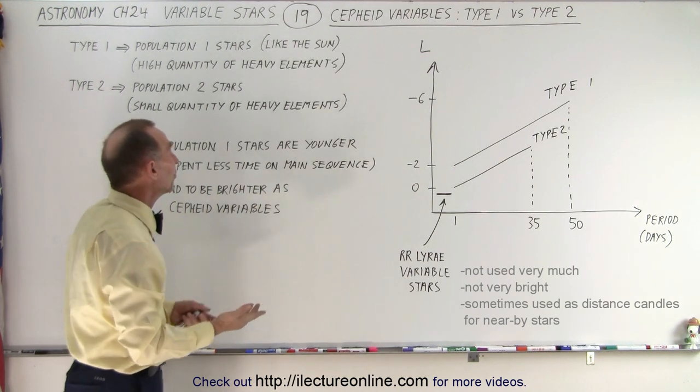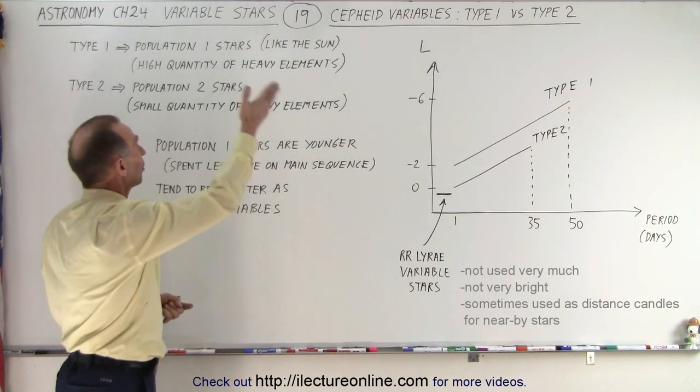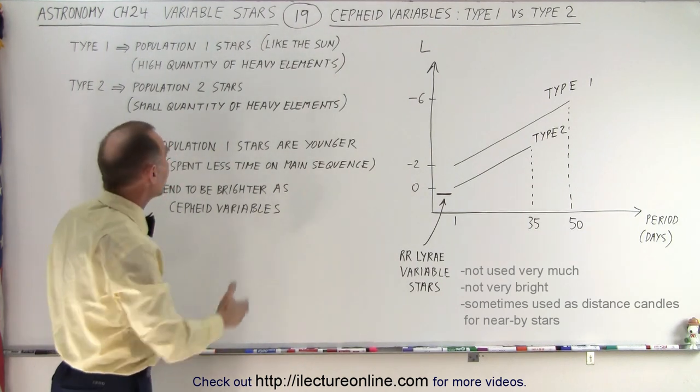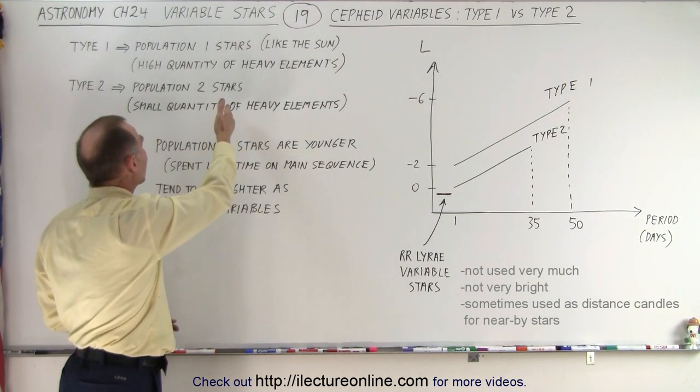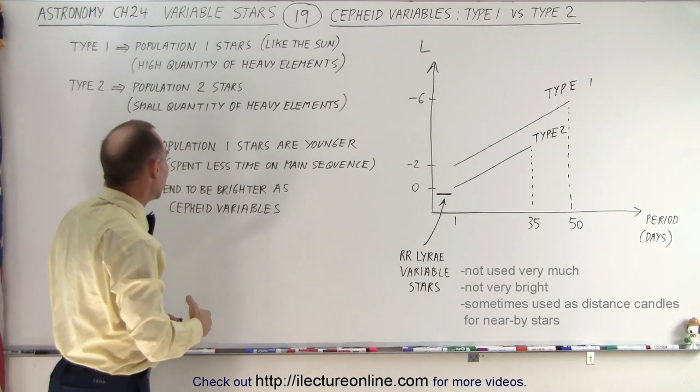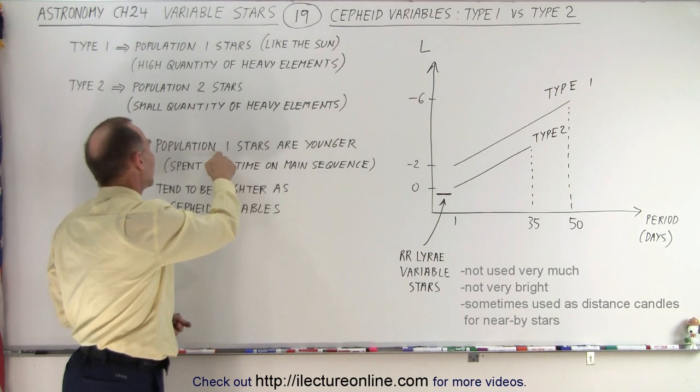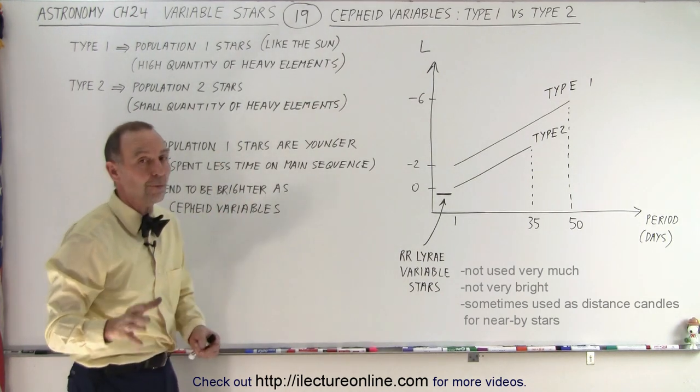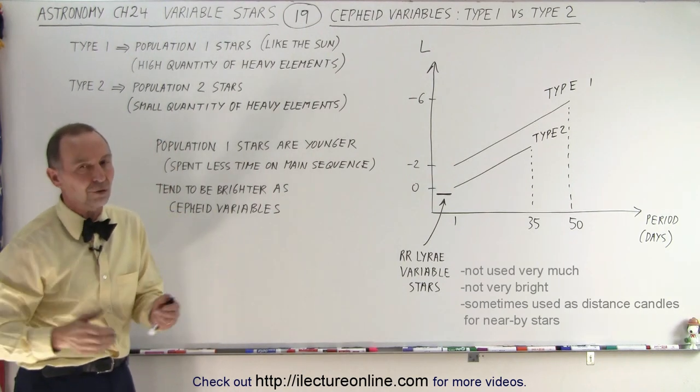So now you realize the difference. Notice that Type 1's are made from population 1 stars, newer stars with more heavy elements. Type 2 are made out of population 2 stars, those are the older stars which don't have as many of the heavy elements. And it turns out that population 1 stars tend to be brighter as Cepheid variables and therefore more important, the ones we tend to use.